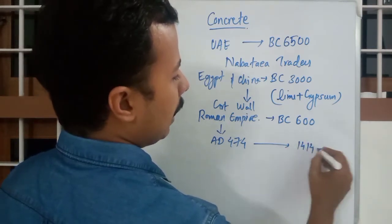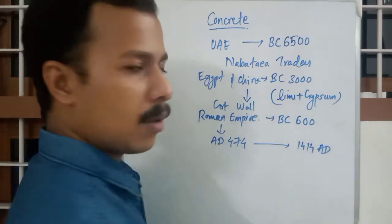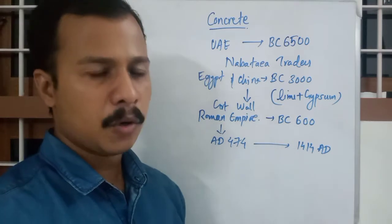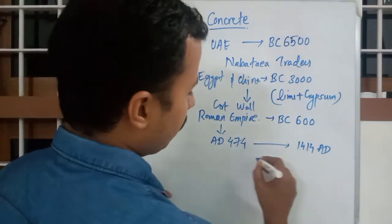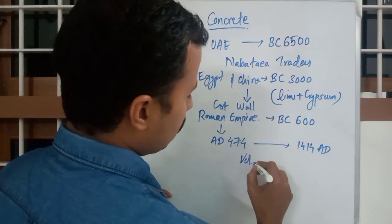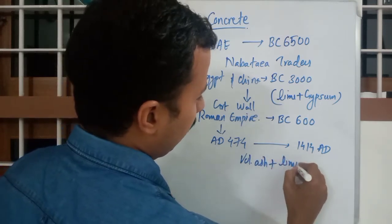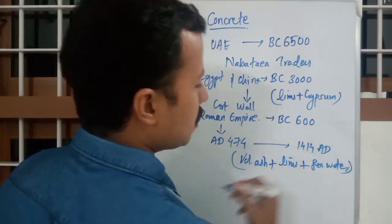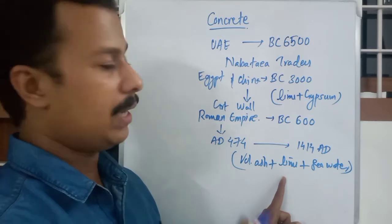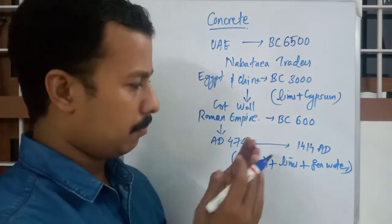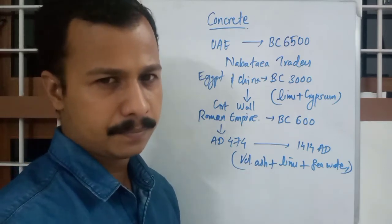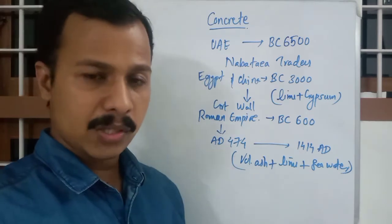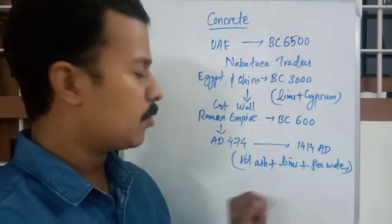It was not found until 15th century, approximately AD 1414, when archaeologists found out the mixture for this particular thing. And it was volcanic ash plus lime plus seawater. So this was the Roman Empire mixture they were using instead of concrete. It was used for joining bricks, it was used for construction of separate bricks, it was used for construction of arches.